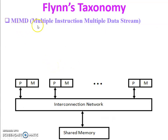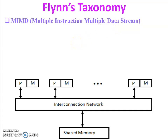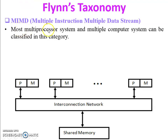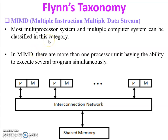The last category is MIMD — multiple instruction multiple data stream. In the figure you can see shared memory and different processing units, each with cache memory. In this system, one program is divided into small tasks and all the different small tasks are given to different processors, with different data given to each processor. A number of small tasks are concurrently executed by processors. Most multiprocessor systems and multiple computer systems can be classified in this category — this is also parallel computing.